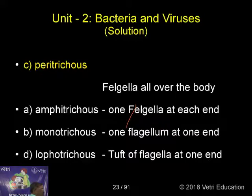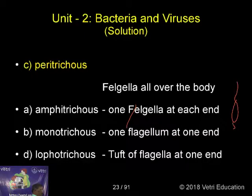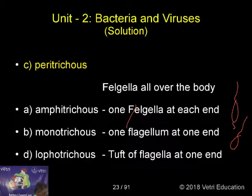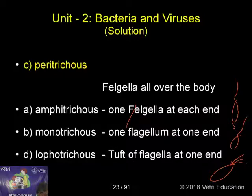Here you can find Amphitricus — flagella at each end. And Monotricus has only one flagellum. Lofotricus means a tuft of flagella at one end.